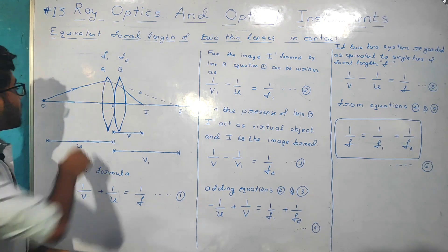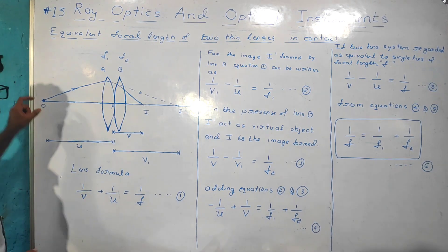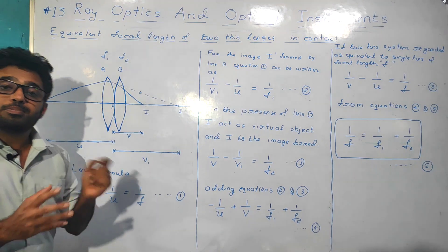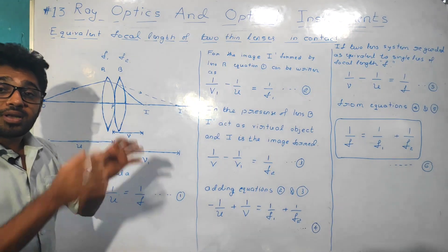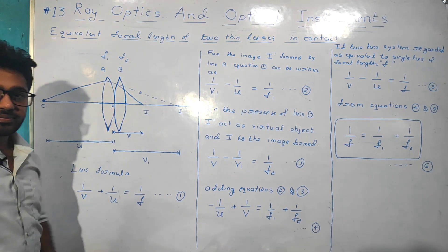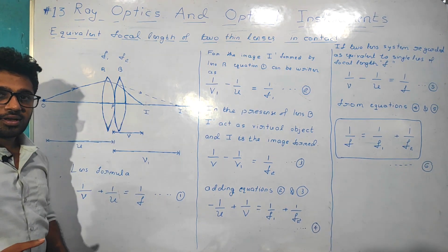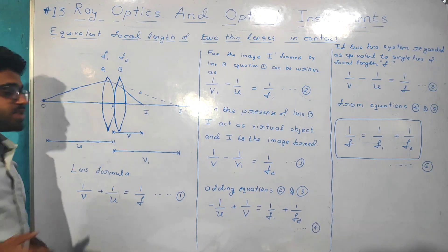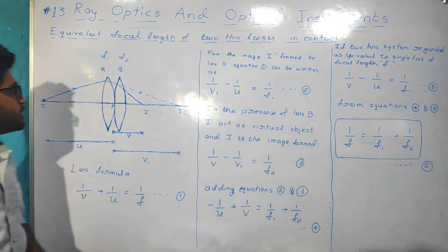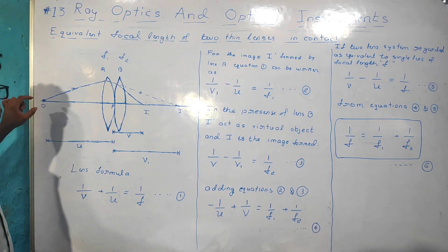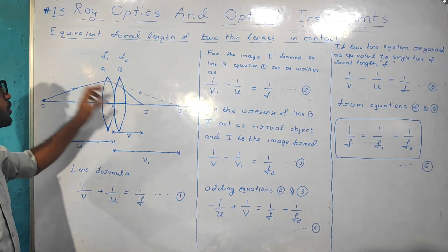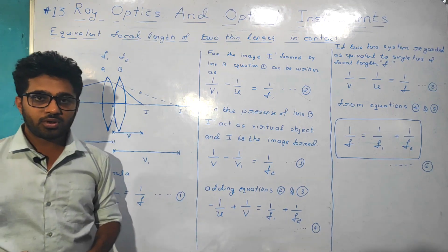O is the object placed at the principal axis of these two lenses. Due to refraction, the image of object O is produced at I.